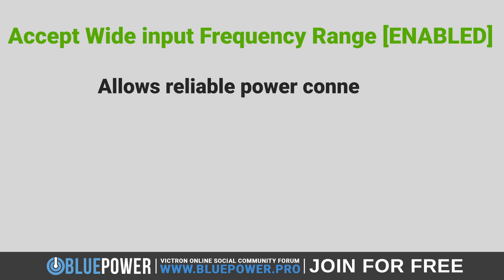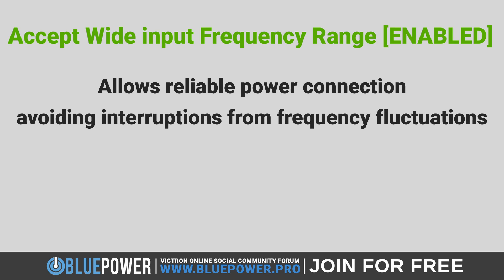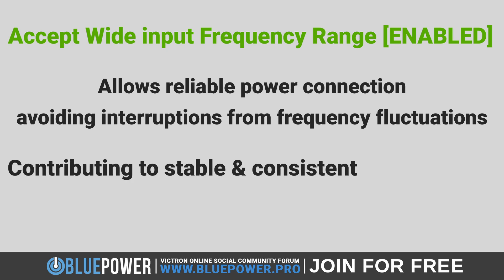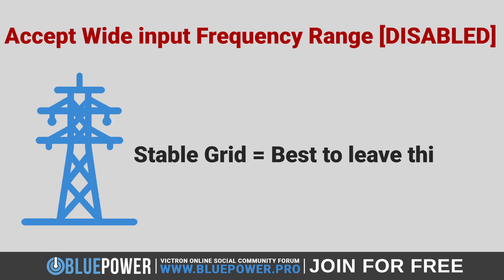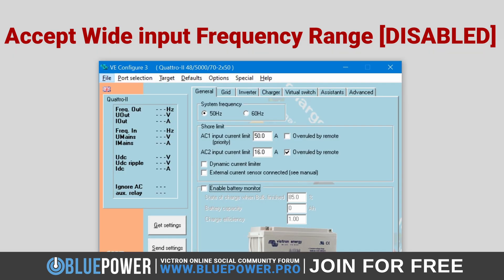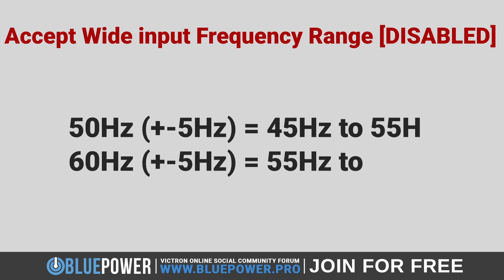It allows the inverter to remain connected to power sources, avoiding interruptions caused by minor frequency fluctuations, contributing to a more stable and consistent power supply. However, if you have a stable grid, then it's best to leave this off. Note that when the setting is disabled, the acceptable input frequency defaults to the system frequency value in the General tab, given a 5 Hz positive and negative leeway on each side.